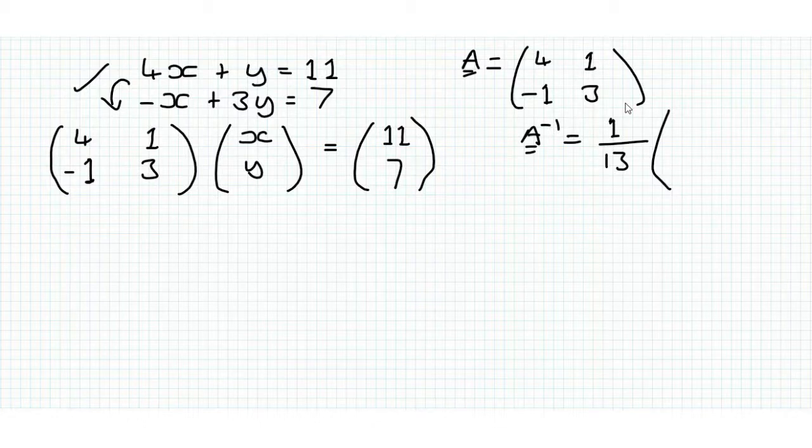Then we want to swap these first two components round. So we want 3, 4, and then we want 1, minus 1.